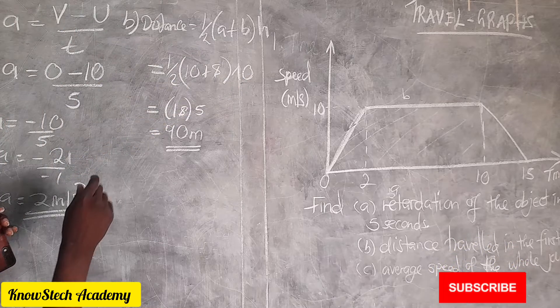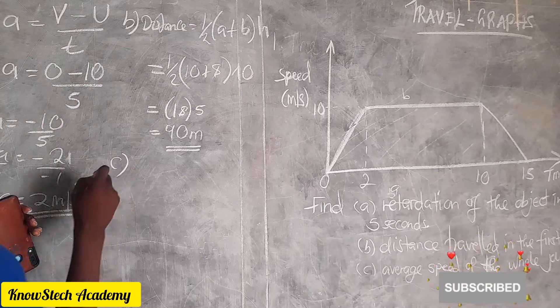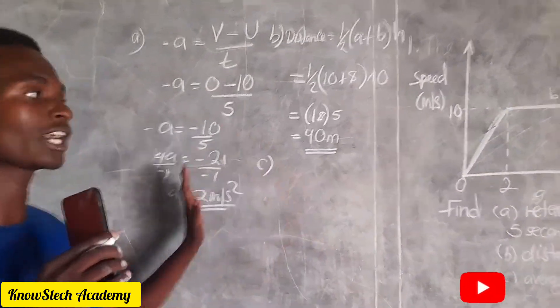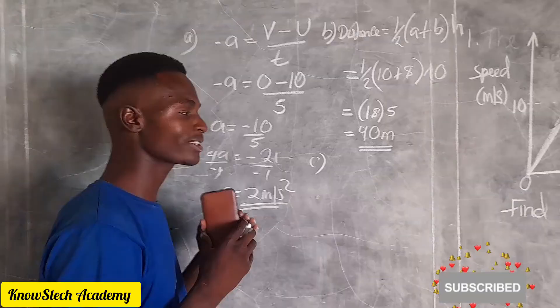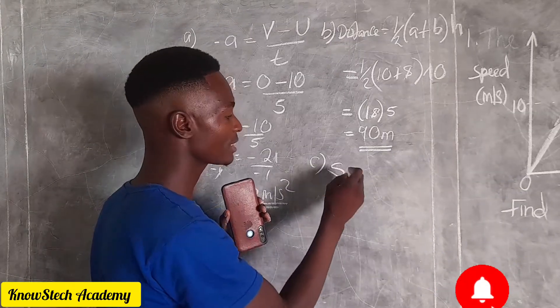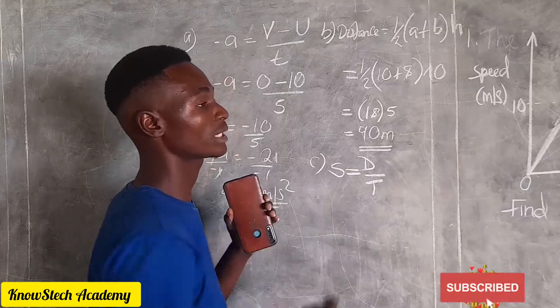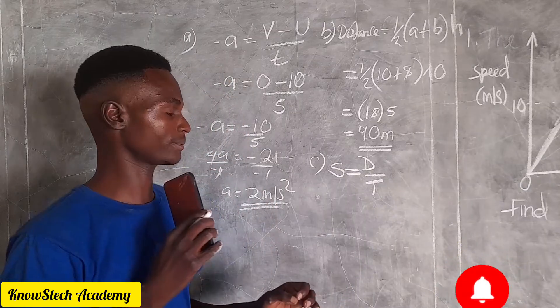Then c, we are asked to find the average speed for the whole journey. Remember the average speed is calculated by using this formula: average speed is equal to distance covered over total time taken.